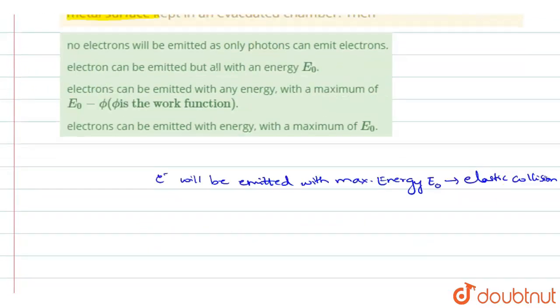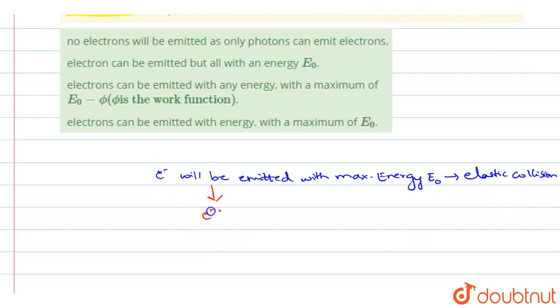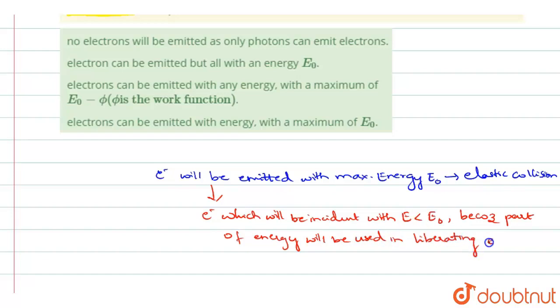So along with these electrons, there will be some electrons which will be incident with energy less than E0 because part of the energy will be used in liberating electrons from the metal surface.